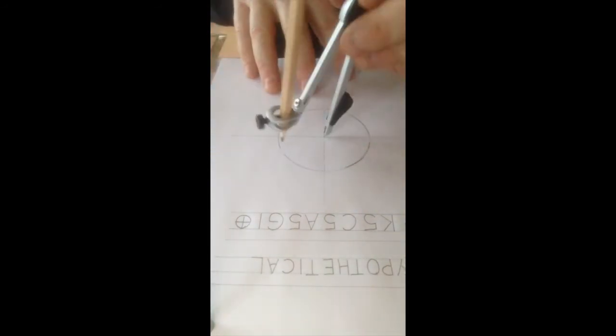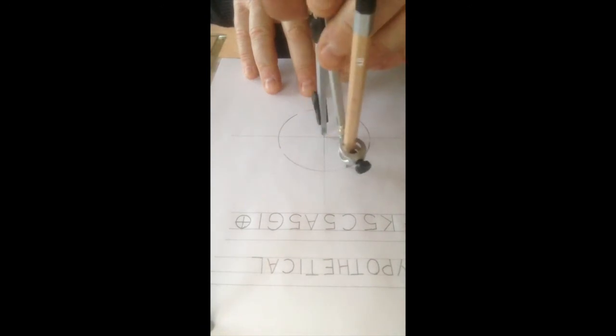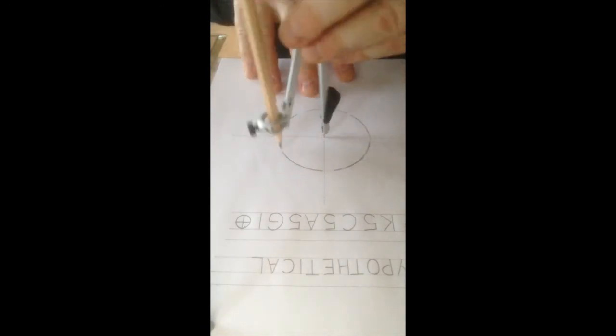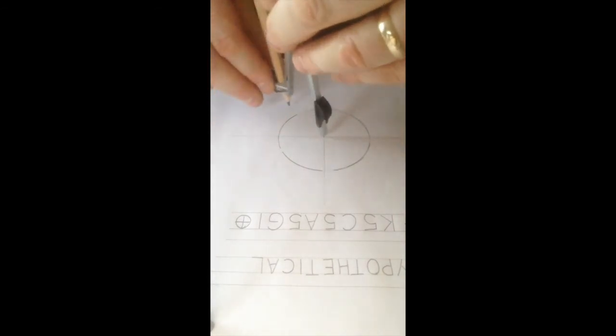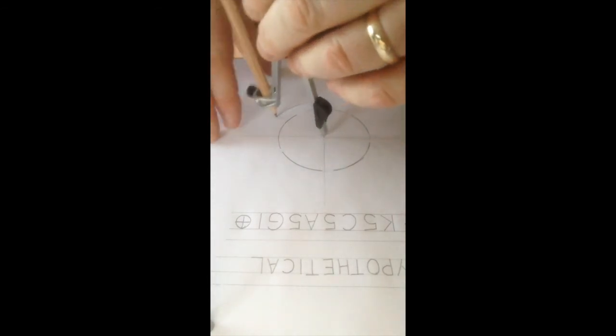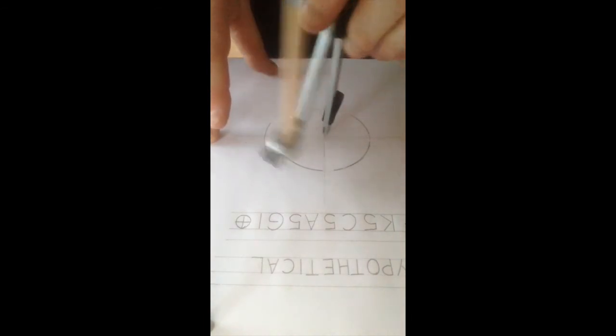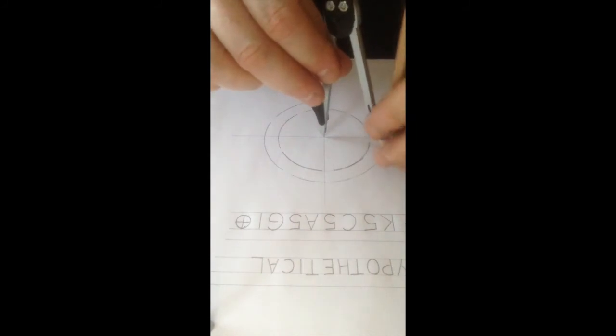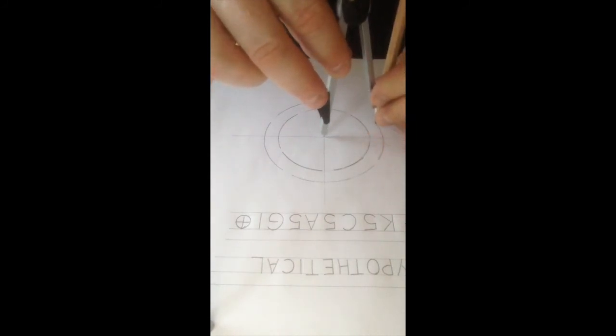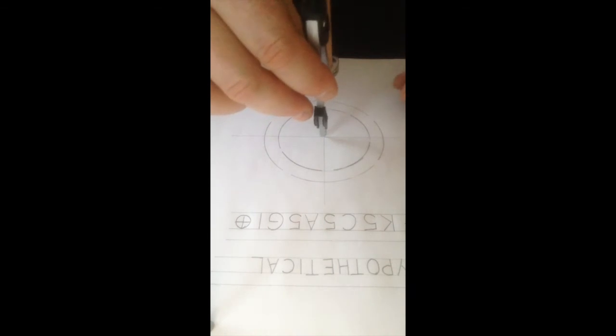You could use a protractor and basically measure out your five points that are going to be in the gaps between the petals. I do this by eye. Same for sepals. Just move the compass out a little further. Do the same procedure.